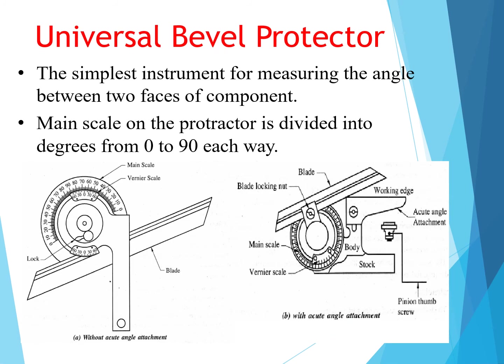It consists of a base plate attached to a main body, and an adjustable blade which is attached to a circular plate containing the vernier scale. You can see the main body and the adjustable blade in the diagram. This is the simplest form of a universal bevel protractor.